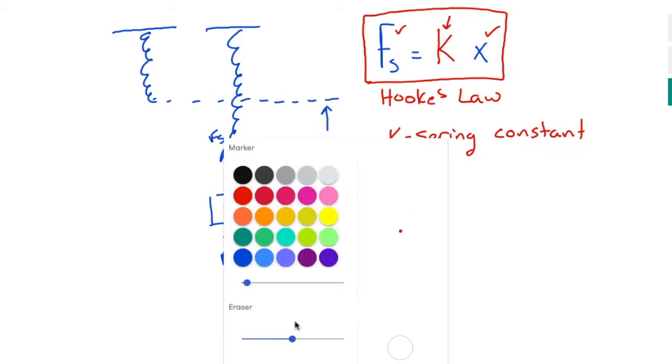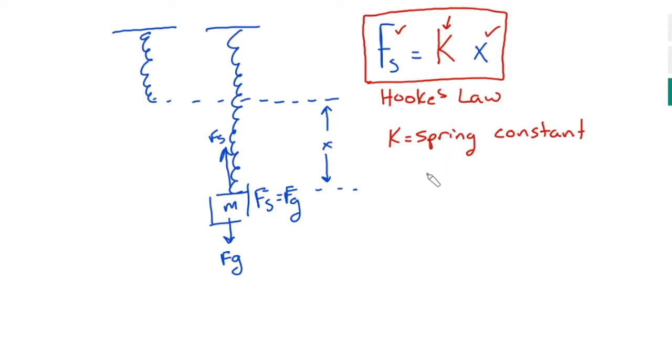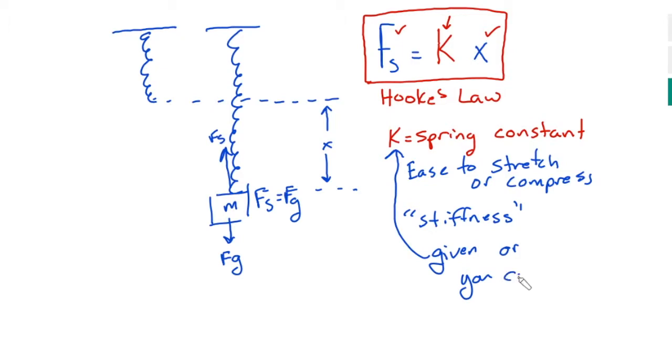And what this really represents is how difficult or how easy it is to stretch or compress the spring. Is the spring stiff or is it very loose or easy to stretch? So this is the ease to stretch or compress. And you might see this called like stiffness of the spring. So this value here is either going to be given or you could solve if you know these particular cases. Let me give you an example.